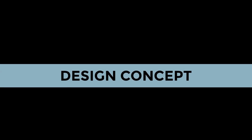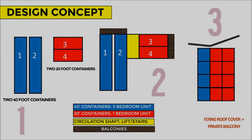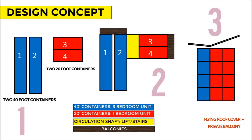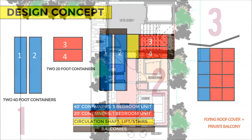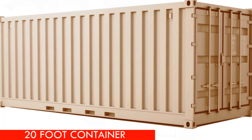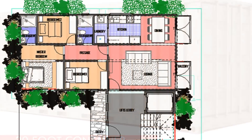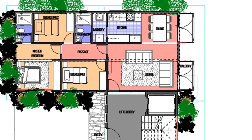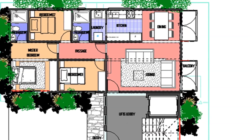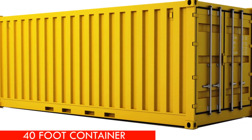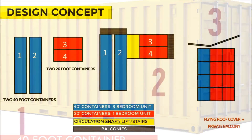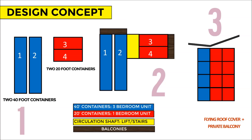On the design concept, this modern shipping container apartment block is designed by combining a one-bedroom housing unit designed from a pair of two 20-foot shipping containers, plus a three-bedroom housing unit designed from a pair of 40-foot containers, to form an L-shaped floor plan.